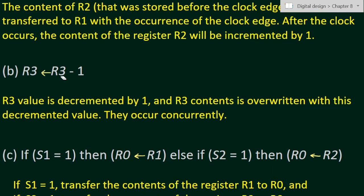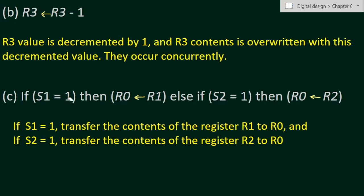Next, for the second statement, we have to decrement the R3 value. Whatever was previously in R3 will be decremented by one and the decremented value will be stored back in R3. So R3 content is overwritten with this decremented value — they occur concurrently within the same register.